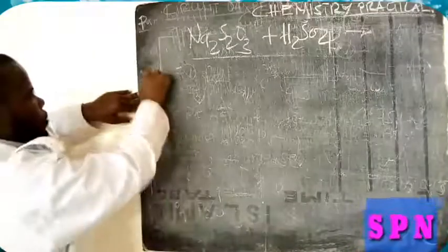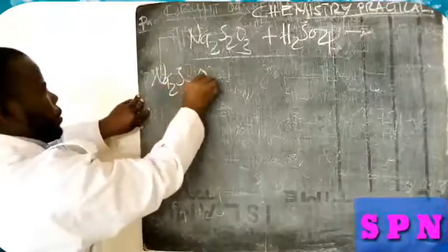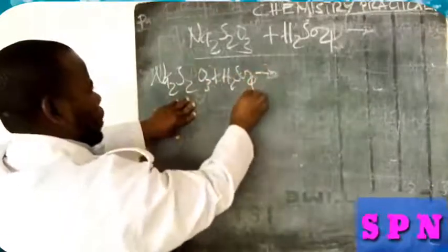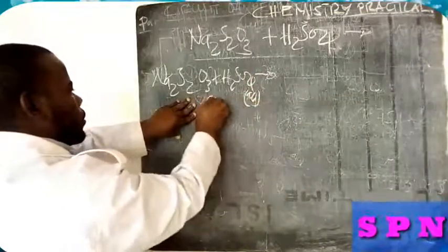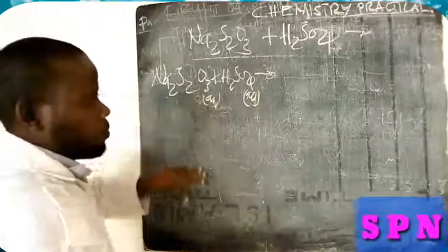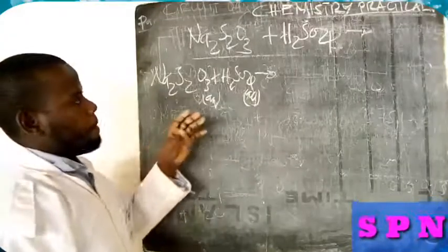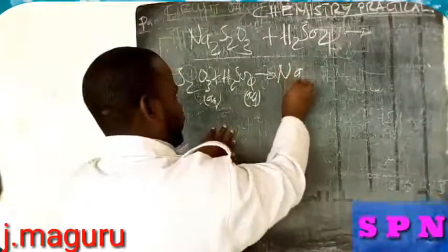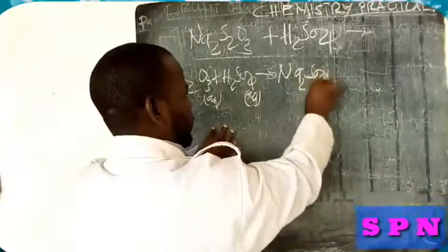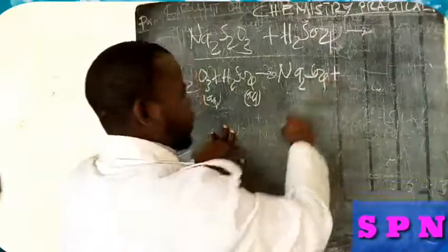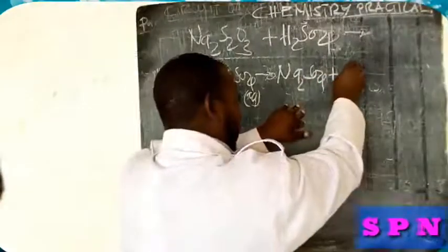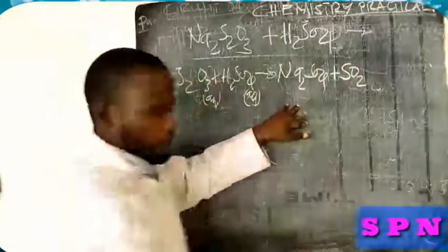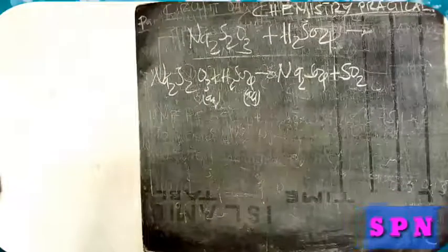So when sodium thiosulfate reacts with this one, after these are in solution, we are going to have sodium sulfate. Then another product we have is sulfur dioxide.